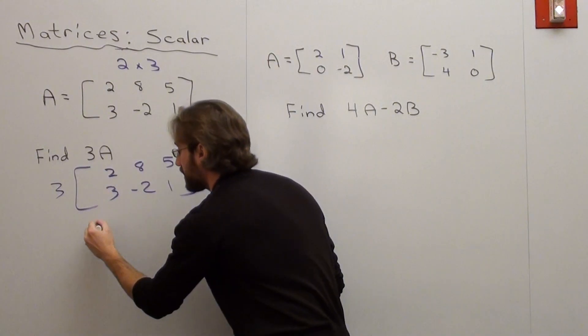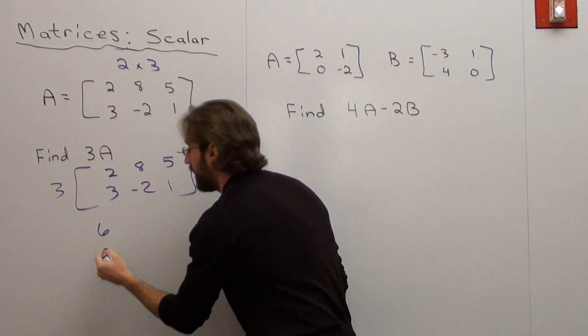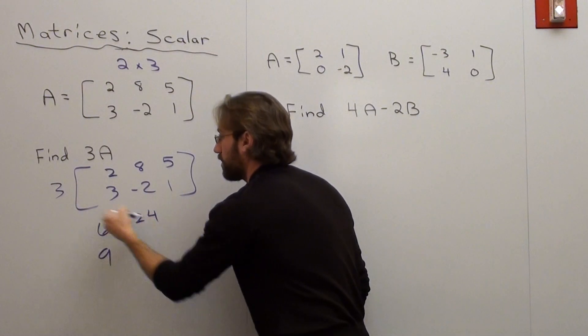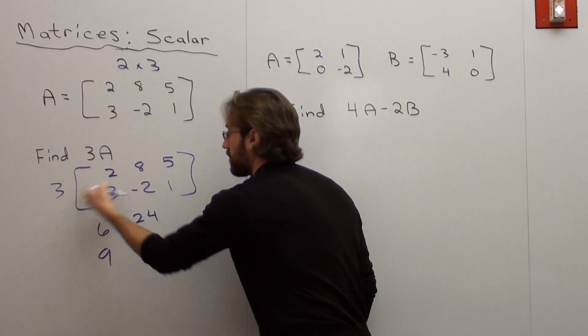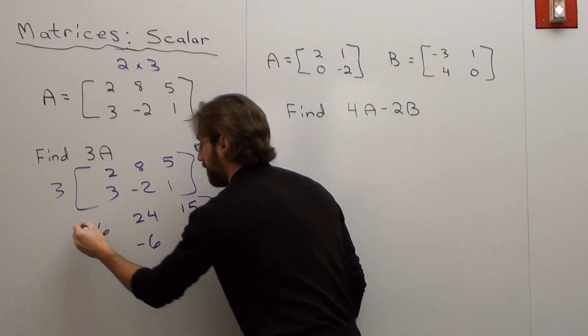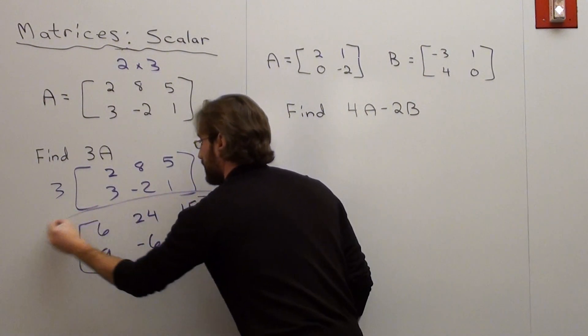3 times 2 is 6. 3 times 3 is 9. Actually, you should probably go in that order, but it doesn't really matter. 3 times 8 is 24. 3 times negative 2 is negative 6. 3 times 5 is 15. 3 times 1 is 3. Bam. That's my answer.